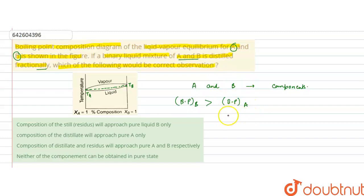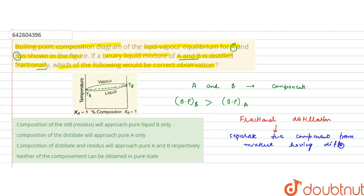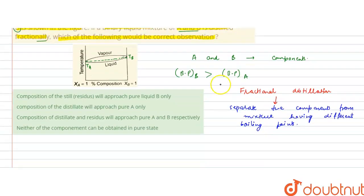Now, if fractional distillation is done — fractional distillation is used to separate components having different boiling points. In fractional distillation, firstly evaporation is done, after that condensation is done.